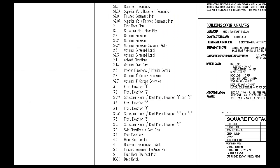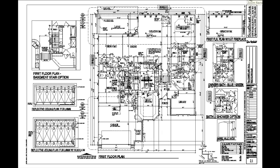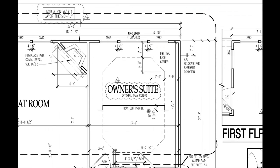The architectural drawings are going to provide us information such as dimensions and wall locations, finished materials and the locations of such, while the structural drawings will give us sizes of beams, headers, and support columns, and attachment methods.